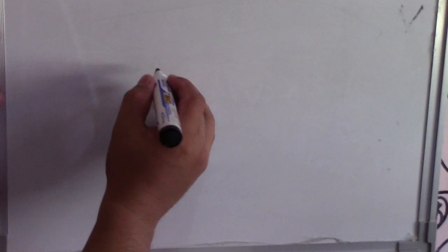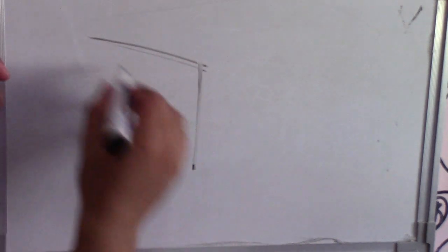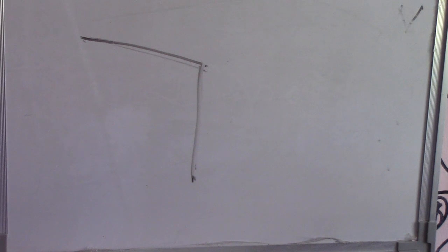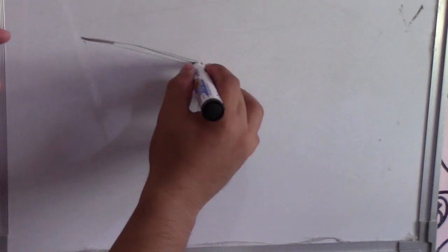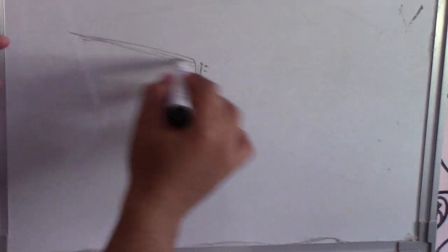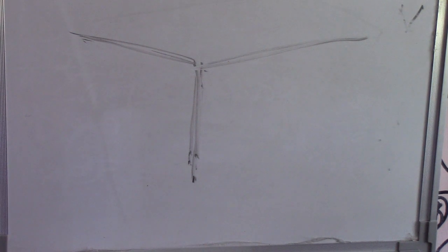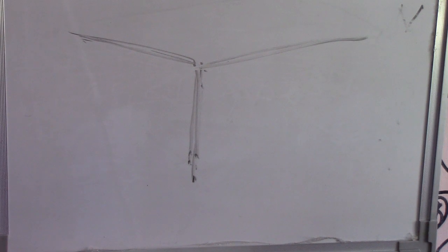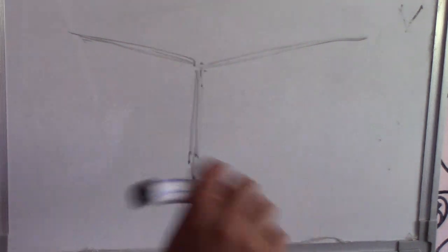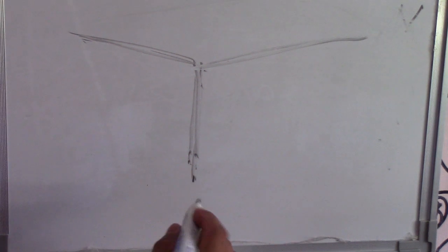Number two is corner joint. Here is the drawing of the corner joint — this is what the corner looks like. The applicable welds for corner joint are: fillet, bevel groove, flare V groove, flare B groove, J groove, square groove, U groove, edge weld, plug, slot, spot, seam, projection, and V groove. Those are the applicable weld symbols for the corner joint.